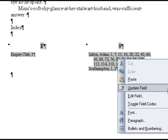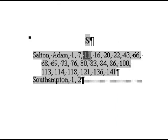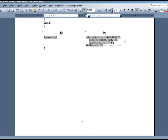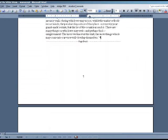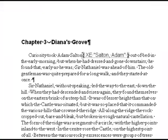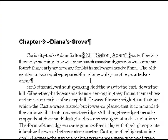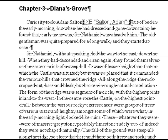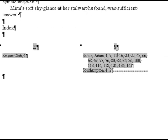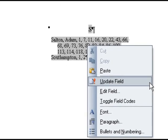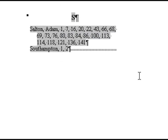Instead, you will want to insert additional entries the way we've already covered, or remove them the following way. Let's pretend one of the Adam Salton entries, the one on page 11, needs to be removed. Rather than deleting the entry in the index itself, go to page 11 of your manuscript and make sure you are in Show Formatting mode so you can see the index script tags. Find the script tag you want to remove and delete it. Then go back to your index at the end of the manuscript, right-click on the index, and select Update Field. You'll notice that the entry on page 11 has been removed.